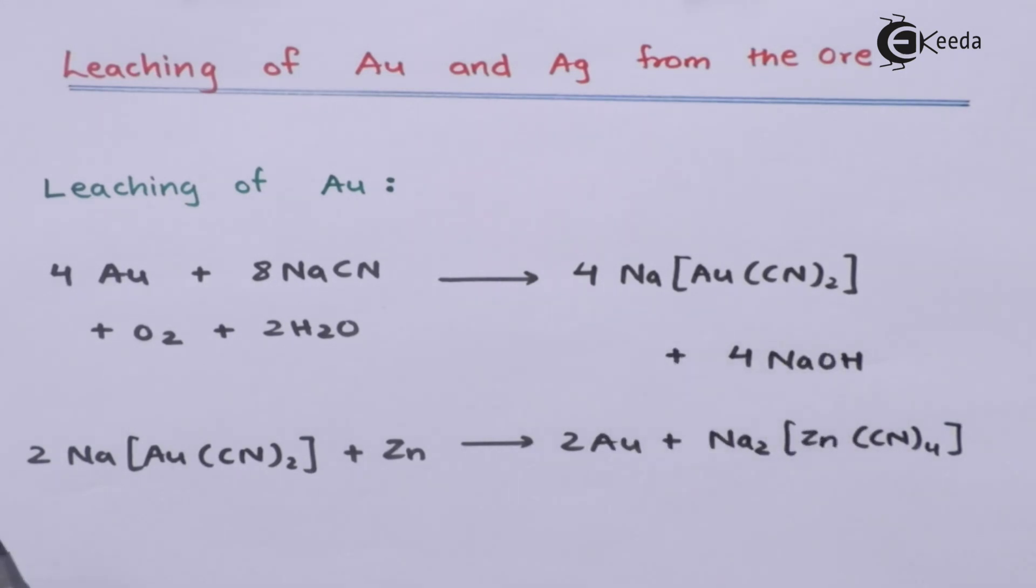The further part is we have to obtain the gold in a pure form. That is why 2 moles of this complex, sodium dicyano aurate, is treated with zinc. Since zinc is more electropositive, it will act like a reducing agent and the complex which has an oxidation state of Au+1 will be converted back to Au having an oxidation state of 0.